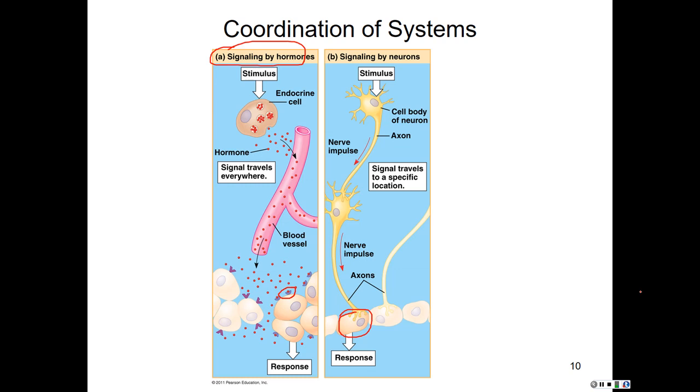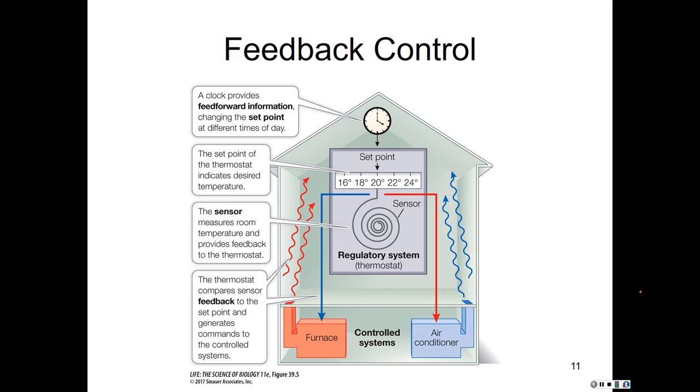This happens through something called feedback control. This feedback can be negative feedback or positive feedback. First, I want to go over a non-living example, which is a thermostat in a house, because it's actually a perfect analogy for exactly what happens in living organisms.